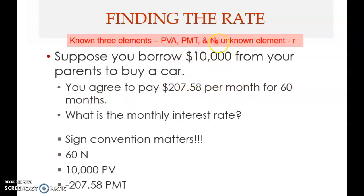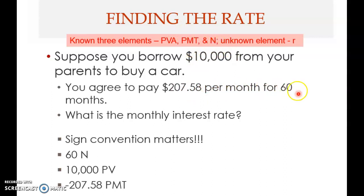What you borrow now must equal what you pay later in present value terms, so $10,000 is the present value of annuity — that's the first known element. The second element is the payment: $207.58 per month. The third known element is N: 60 months. Everything is consistent in monthly terms. The unknown is the monthly interest rate.